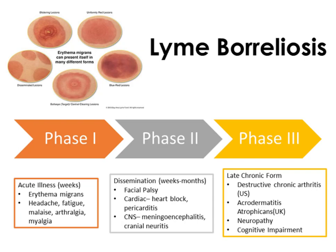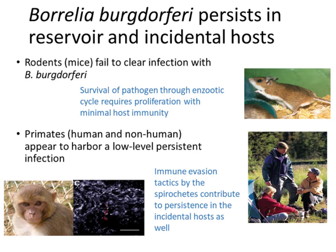Patients also develop neuropathy and cognitive impairment. We know that Borrelia burgdorferi persists in reservoir and incidental hosts. Rodents are reservoir hosts and fail to clear the infection. Survival of the pathogen through the enzootic cycle requires proliferation with minimal host immunity. Primates, both human and non-human, appear to harbor a low-level persistent infection, and immune evasion tactics utilized by the spirochetes contribute to this persistence.